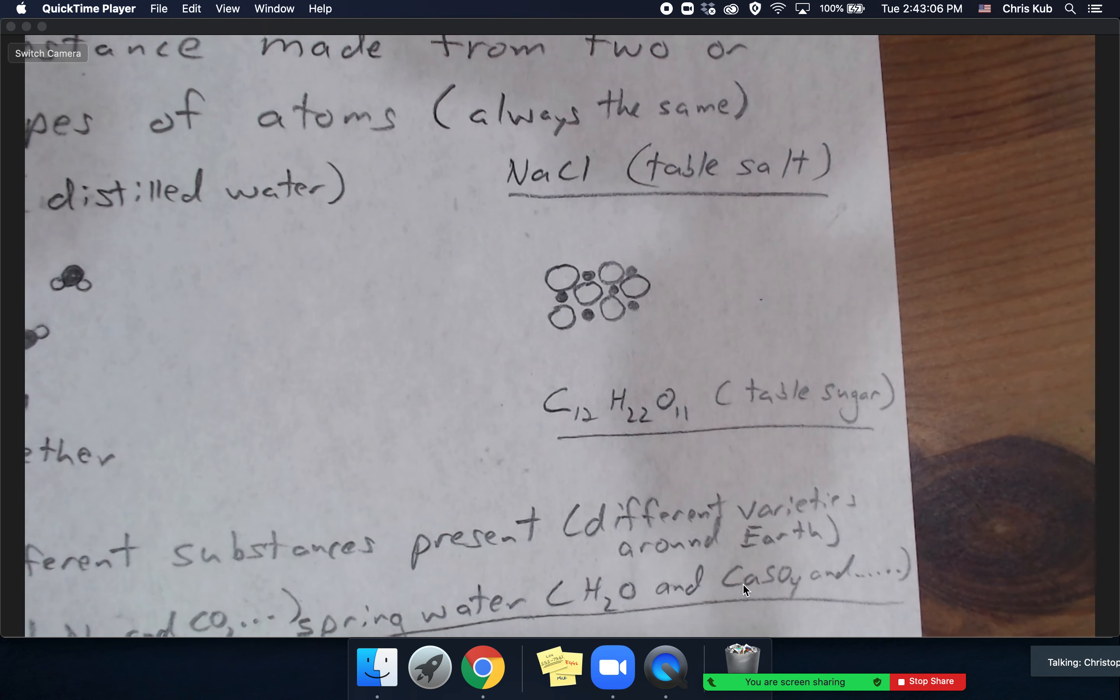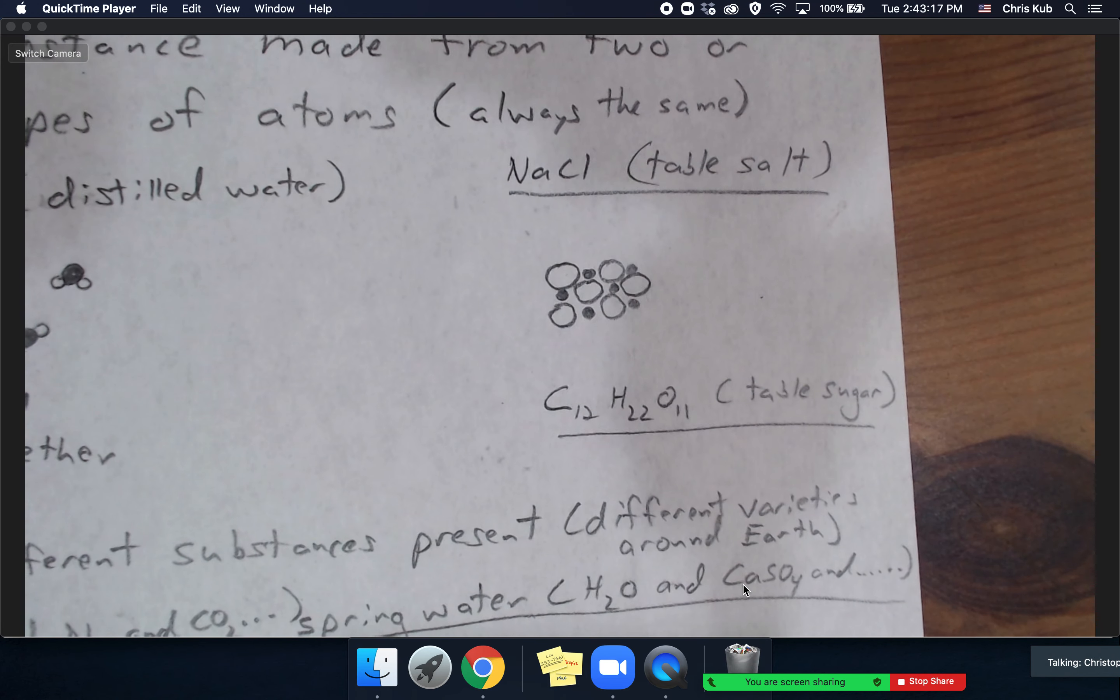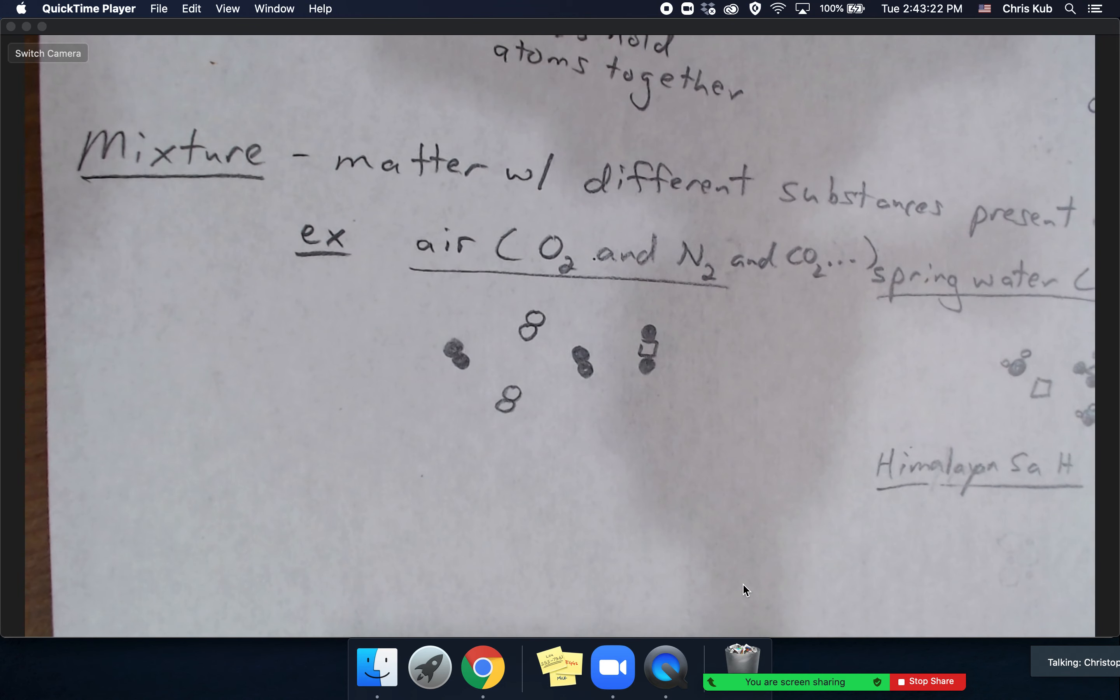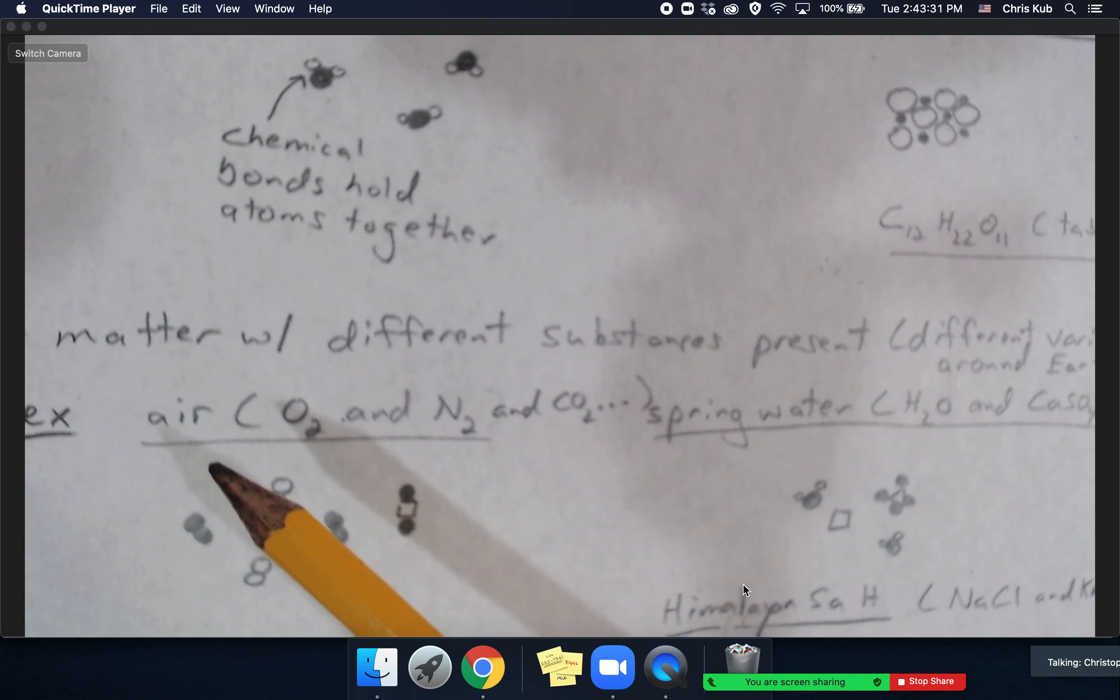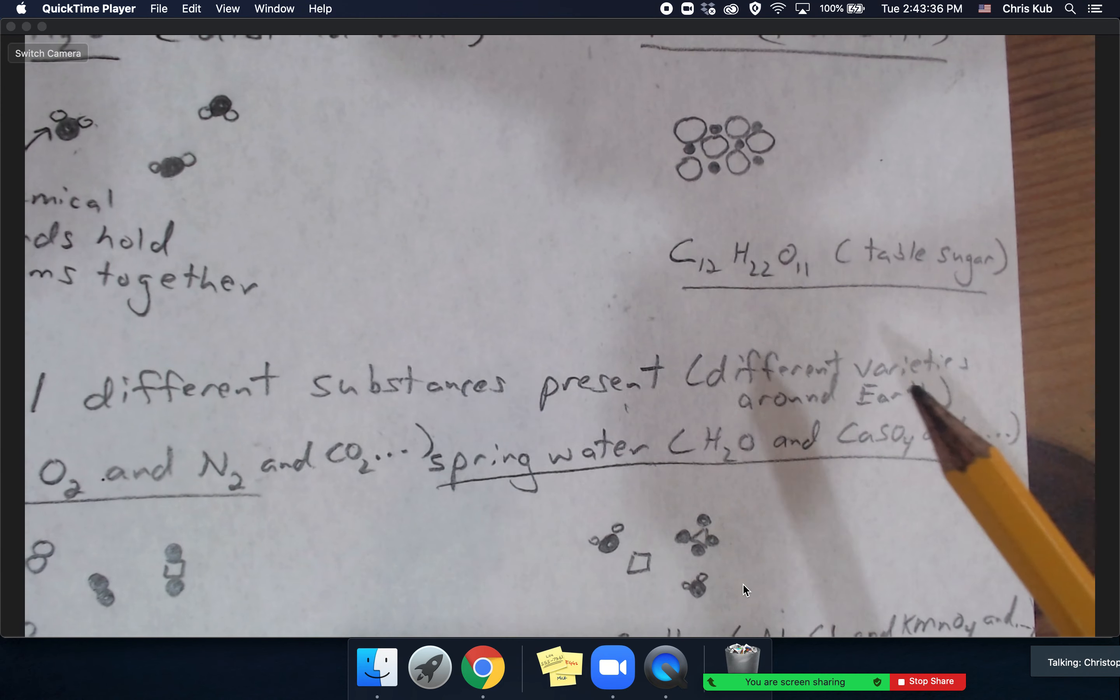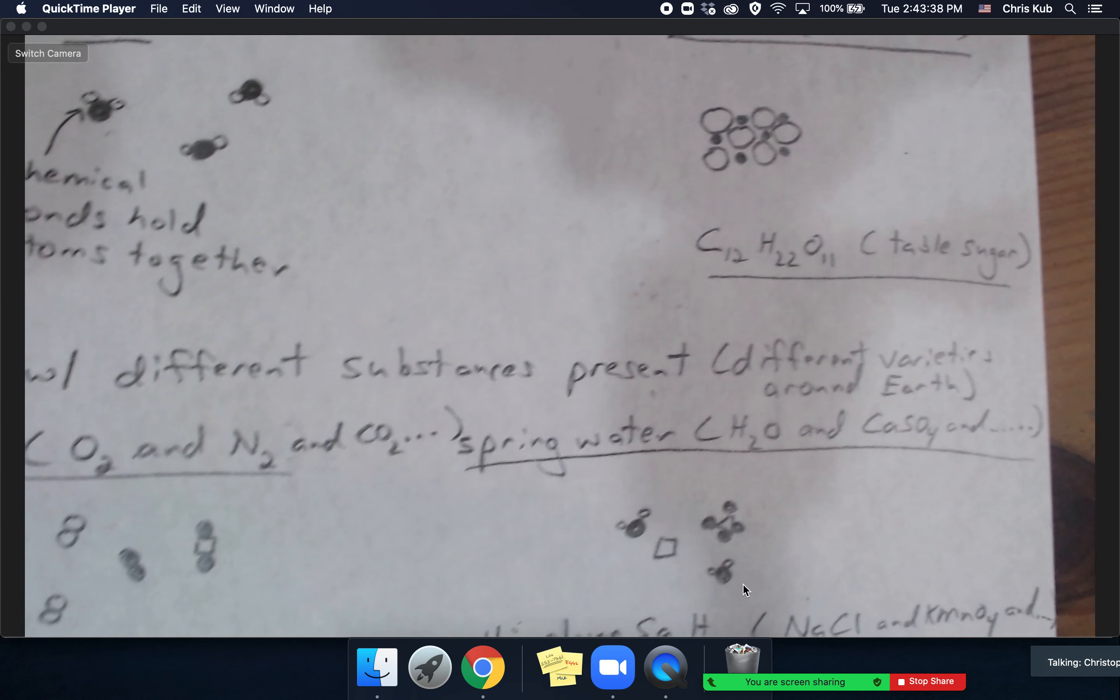If there were other things mixed in there, like for example if you had honey or maple syrup, then it wouldn't be table sugar, it would be maple syrup. There'd be a whole bunch of other things like water. Now when we have elements in the same container as a compound, or multiple compounds together, then we have a mixture. Mixture is when matter with different substances are present.